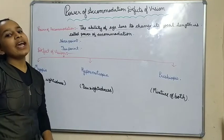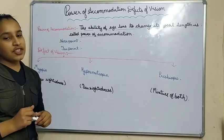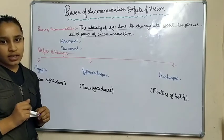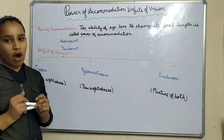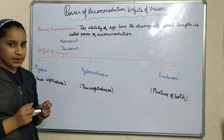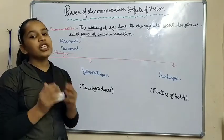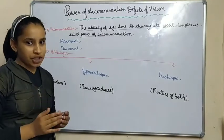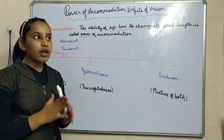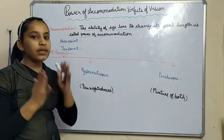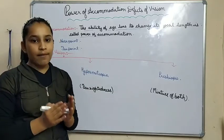Hello friends, I am Omika Pandey and today I will tell you about class 10 physics chapter number 11, the human eye and the colorful world — topic: power of accommodation and defects of vision. First we will see power of accommodation. The ability of the eye lens to change its focal length with the help of ciliary muscles is called the power of accommodation.